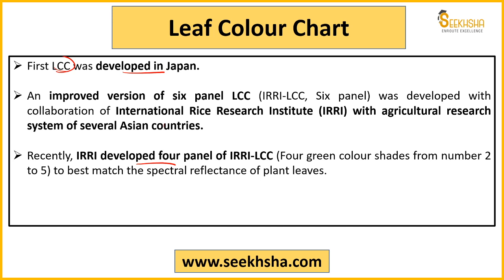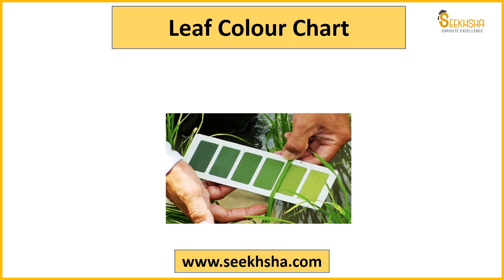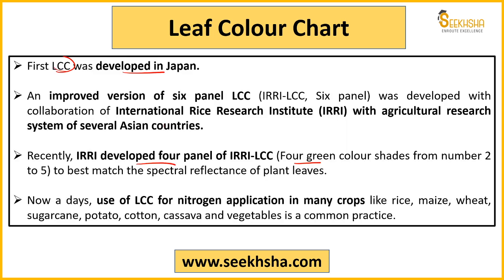The four-panel LCC version has four green colors — different shades of green. In the six-panel version, there are six shades; in the five-panel, five. The numbering in the four-panel version starts from 2: 2, 3, 4, 5. The LCC is still widely used today.